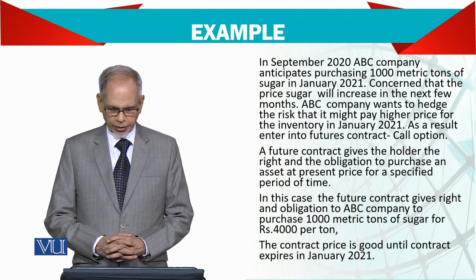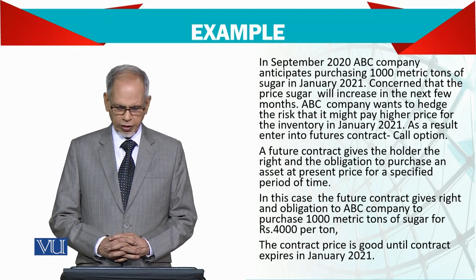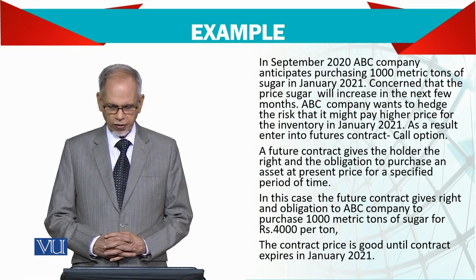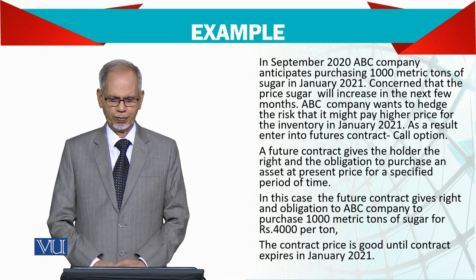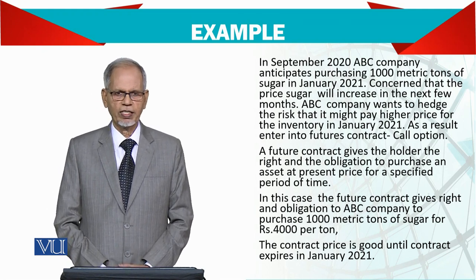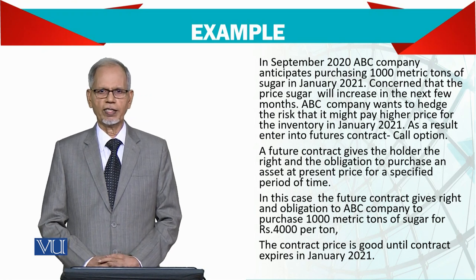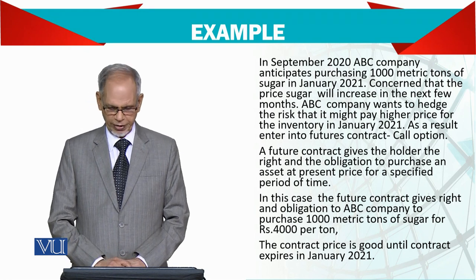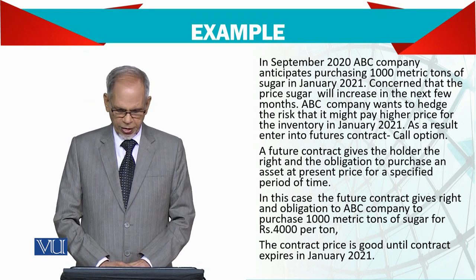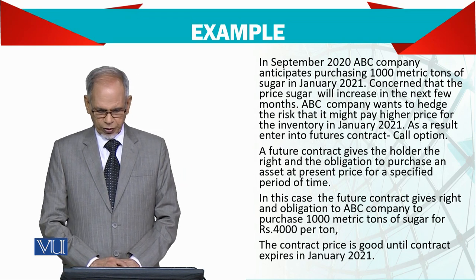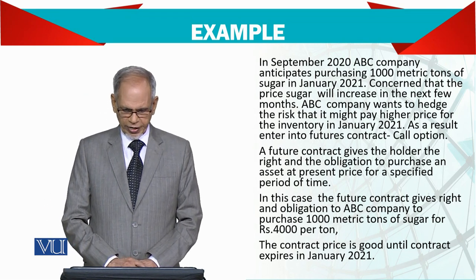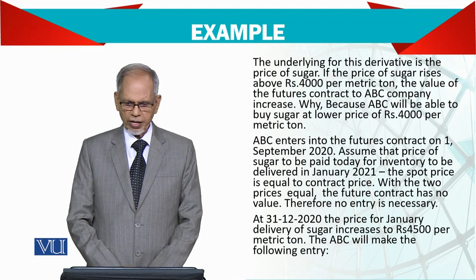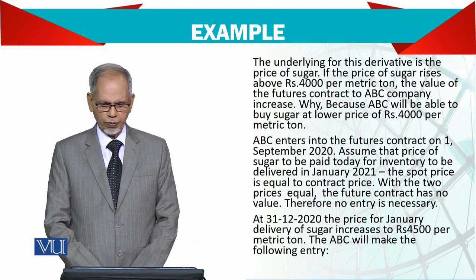In this case, the futures contract gives ABC company the right and obligation to purchase 1,000 metric tons of sugar at Rs. 4,000 per ton. The contract price holds until the contract expires in January 2021. The underlying for this derivative is the price of sugar.